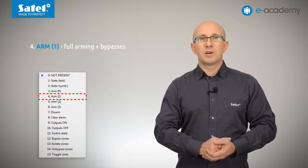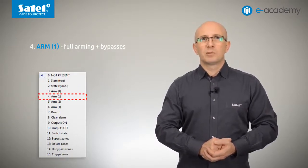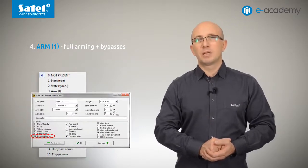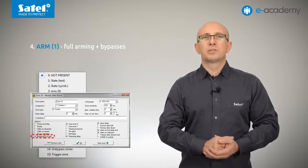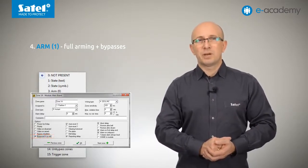Item four is arm 1, which means full arming plus bypasses. It is responsible for arming the system, excluding detectors that have the bypassed if no exit option enabled. This mode can be used in situations where, for example, the selected detectors in a particular room are not to be armed.